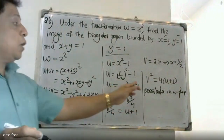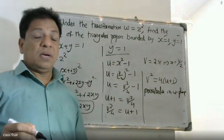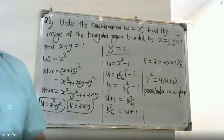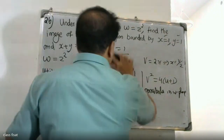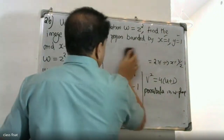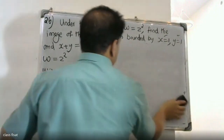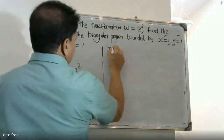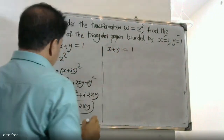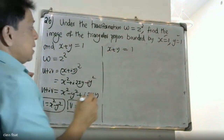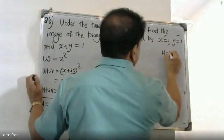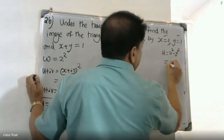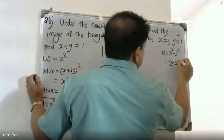This is a parabola. So y equal to 1 maps to the parabola v squared equals 4 into u plus 1 in the w-plane. Now for the third boundary: x plus y equal to 1.